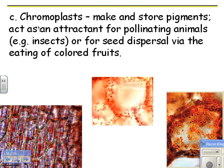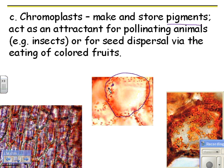Chromoplasts — 'chroma' for color. They make and store pigments, so different colors, and that serves as an attractant for pollinating animals like insects or hummingbirds. So chromoplasts would be found in flowers. They're also used for seed dispersal — you eat colored fruit like tomatoes or peppers. We'll look at this in lab too. All those little tiny red circles in the cell are the chromoplasts.